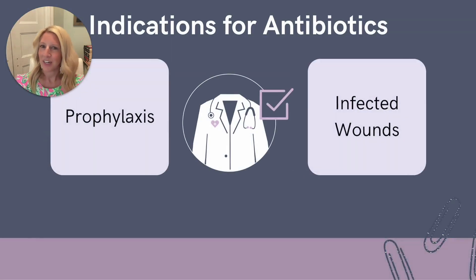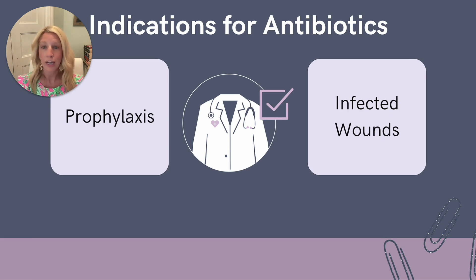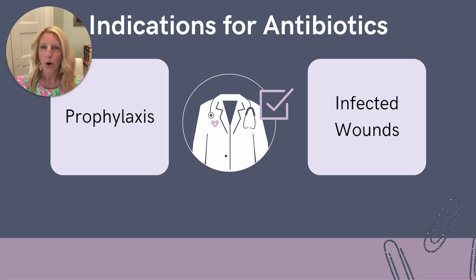What about indications for antibiotics? There are two situations where we might need to prescribe an antibiotic after a dog or cat bite. First, for prophylaxis: if the patient has a bite wound on their hand or face, or if they're immunocompromised or have a comorbidity such as diabetes that could impair wound healing, or even if they experienced a deep puncture wound such as a cat bite, then prophylaxis is warranted. Secondly, if the wound is already infected, we are definitely going to want to get an antibiotic on board.